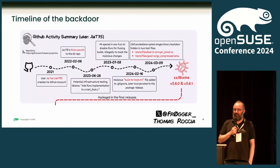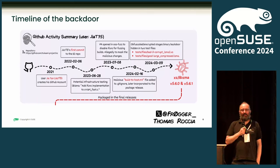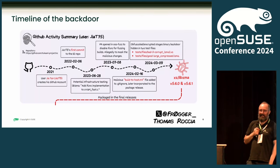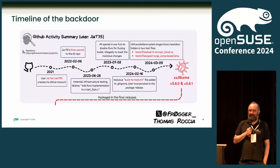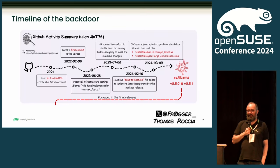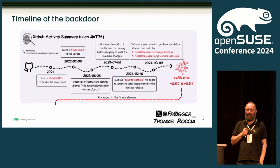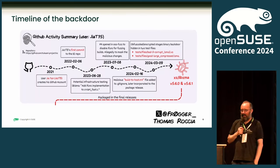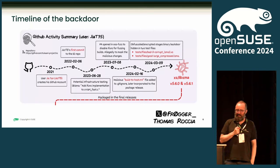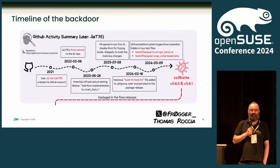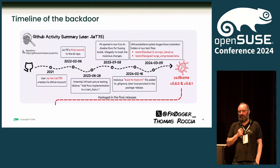At first we thought this was actually someone whose account had been hijacked temporarily — that someone stole JiaT75's credentials and just released a malicious release. But soon, after looking at the Git logs and checking when things were introduced, it turned out that at least half a year before was spent on this. Looking deeper, the whole persona working there was actually a malicious actor.